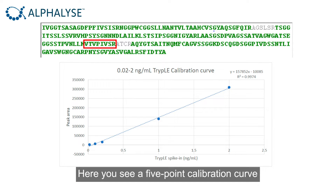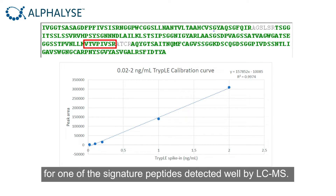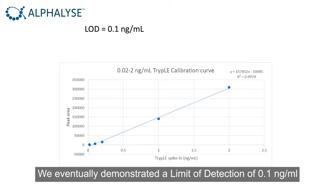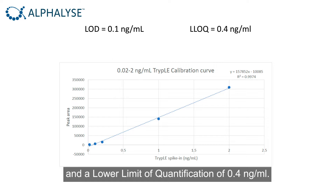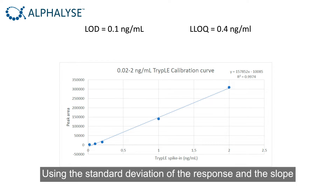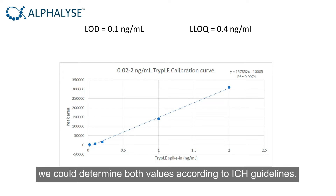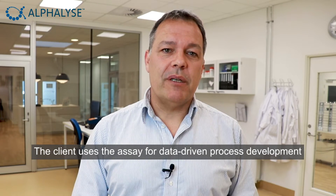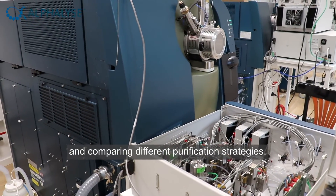Here you see a 5-point calibration curve for one of the signature peptides, detected well by LC-MS. We eventually demonstrated a limit of detection at 0.1 ng per ml and a lower limit of quantification at 0.4 ng per ml. Using the standard deviation of the response and the slope, we could determine the LOD and LLOQ according to ICH guidelines. The client now uses the assay for data-driven process development and for comparing different purification strategies.